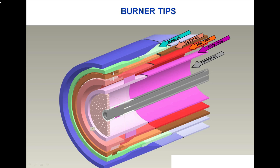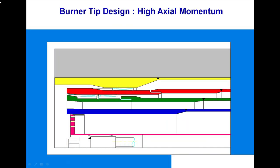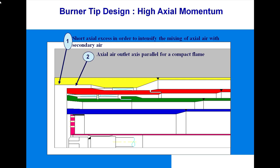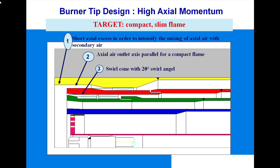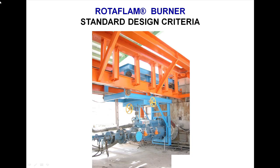Burner tip design: high axial momentum, short axial axis — to identify the mixing of axial air with secondary air. Axial air outlet axis is parallel for a compact flame. Swirl cone with 20 degrees for a long target means a compact and slim flame will come out. Standard design criteria for burner holding structure.